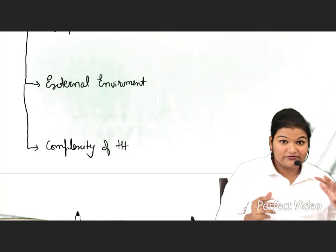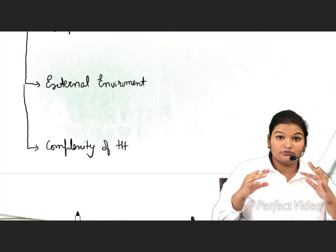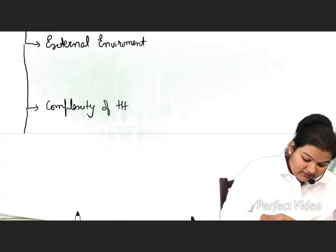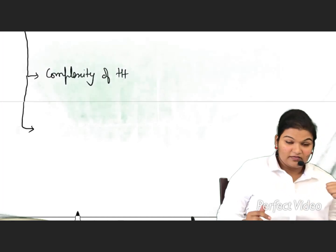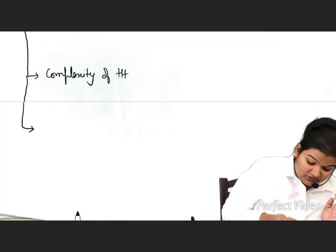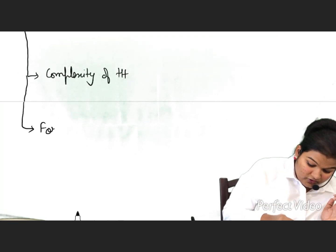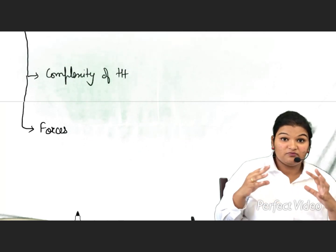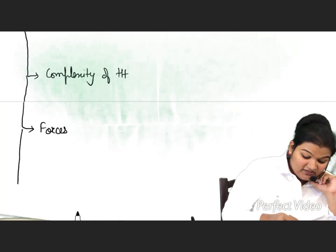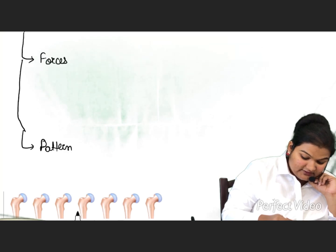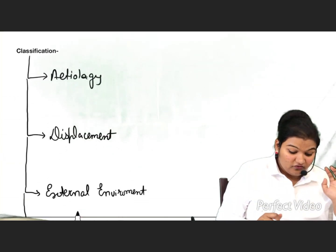Then we have complexity — how complex is the treatment of the fracture, and what all things you need to do for treatment. Then we have the quantum of force — the velocity or force by which the fracture is occurring. And the last basis is the pattern of fractures.